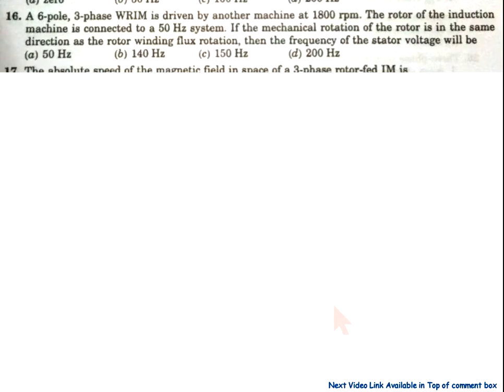So option C is correct. Now come to question number 16: a six-pole, three-phase wound rotor induction machine is driven by another machine at 1800 rpm.